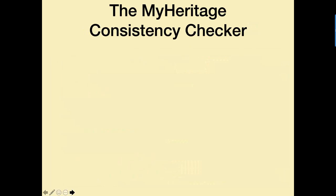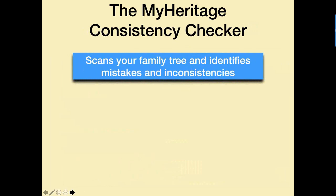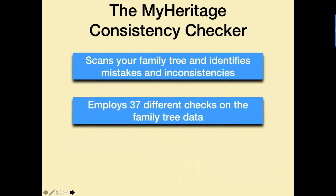So what is the MyHeritage Consistency Checker? First of all, it scans your family tree and identifies mistakes and inconsistencies. There is a specific definition for each inconsistency being considered. It employs 37 different checks on the family tree data — 37 different categories of consistency. That's why even if you're very meticulous, it's going to be very difficult not to make at least one or two of these errors, simply because you may copy a date that is wrong from an original document.